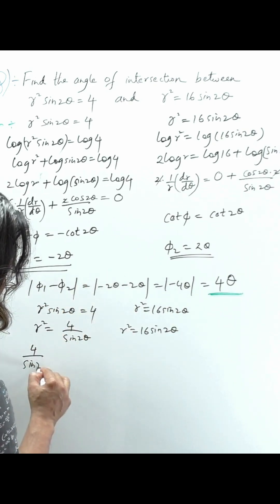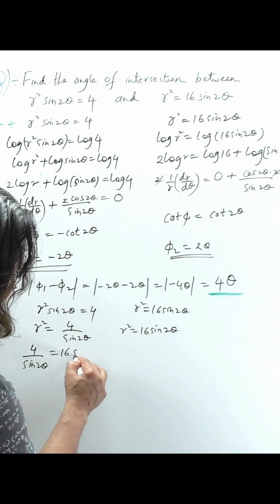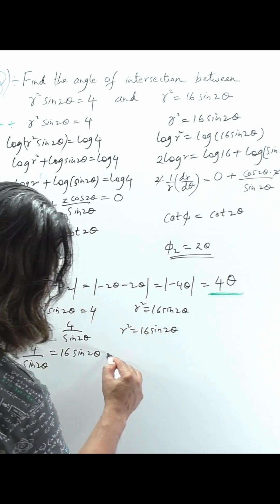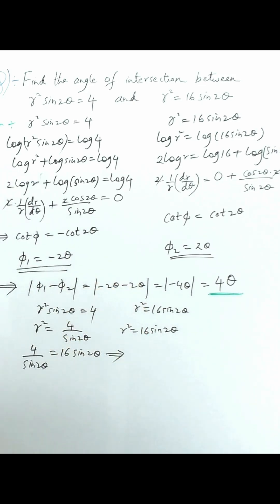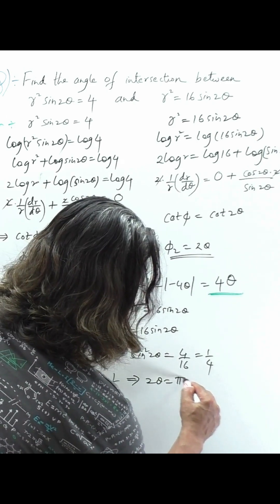4/sin 2θ is equal to 16 sin 2θ, and that implies 2θ is equal to 30 degrees, or π/6.